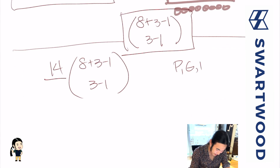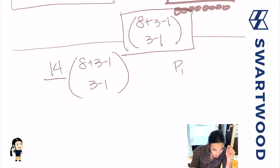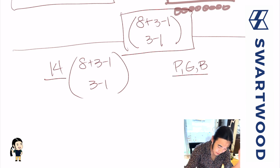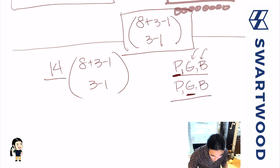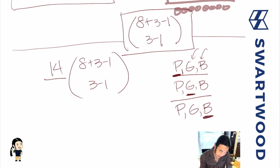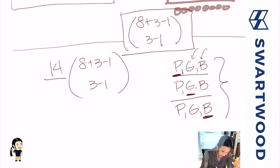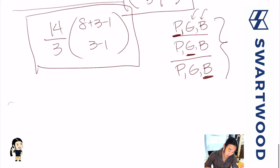That's almost right, but there's a slight problem. Say we picked Percival, Galahad, and Bors. In the way we counted, we picked a lead knight - in one version Percival is the lead, in another Galahad is the lead, and in another Bors is the lead. When we multiplied by 14 we saw all three of these possibilities, but they all give the same group. So we've overcounted by 3 for this group of three. To fix that, we divide by 3. This is actually the solution - a pretty fast solution to a classic problem.